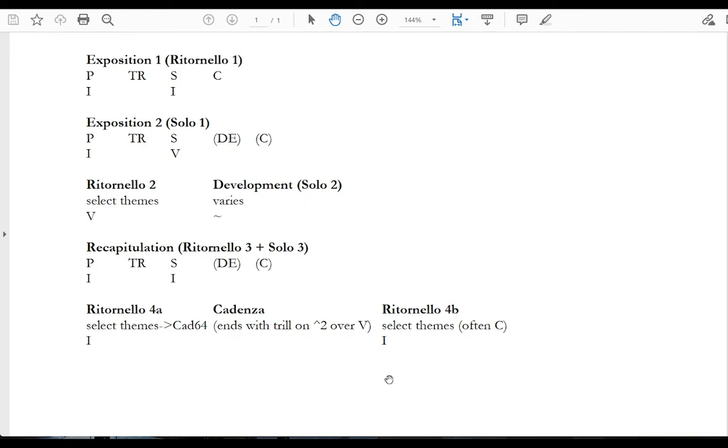That's usually the last that you hear of the soloist. The orchestra will continue and finish out the piece with select themes, most often the closing theme. So especially if the recap didn't have the closing theme, often that closing theme will be moved to the fourth ritornello and the orchestra will close out that theme.